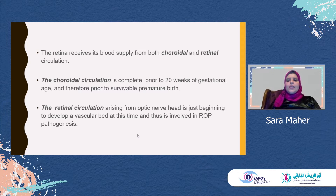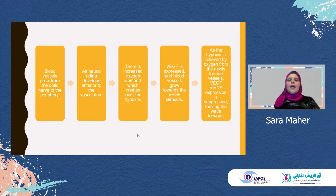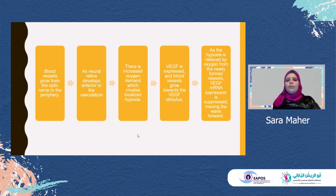This explains how the blood vessels grow from the optic nerve head toward the periphery. As the neural retina develops in series to the vasculature, there is increased oxygen demand which creates localized hypoxia, and this will increase VEGF. VEGF is expressed and the blood vessels grow toward the VEGF stimulus. While the hypoxia is relieved by oxygen from the newly developed vessels, the expression of VEGF decreases and the wave stops and is transmitted forward.